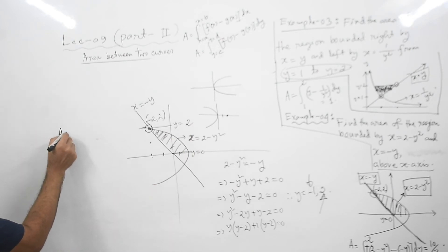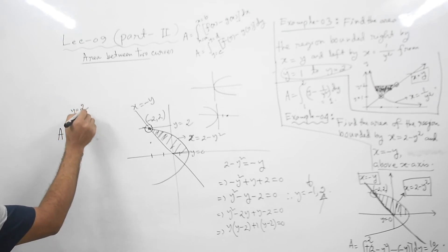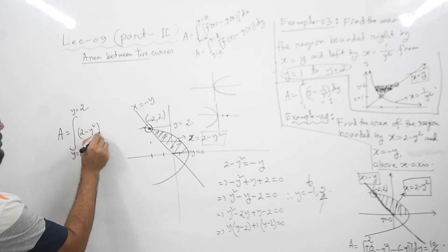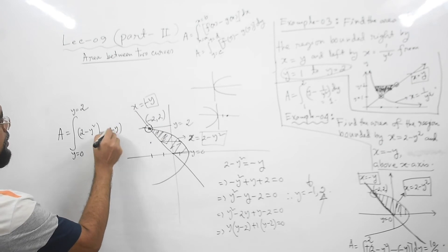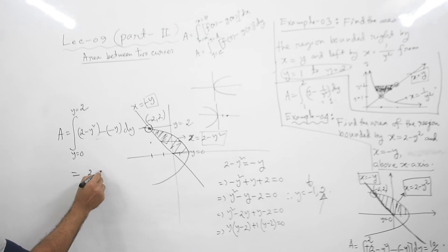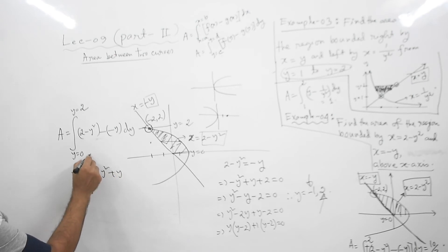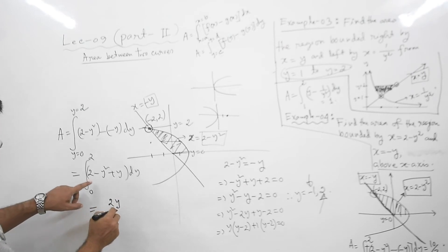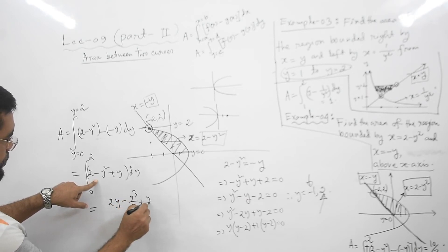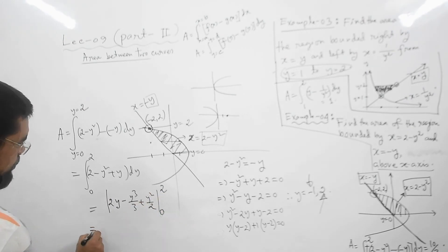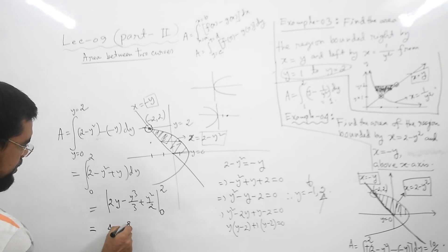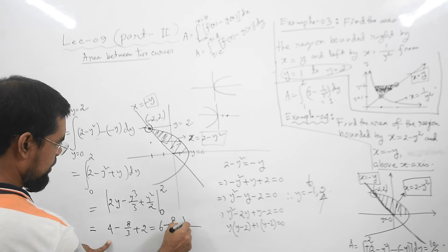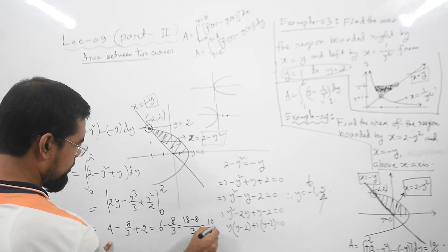The area A equals the integral from y = 0 to y = 2 of (right curve - left curve) dy. The right curve is 2 - y² and the left curve is -y, so we integrate (2 - y² - (-y)) dy = (2 - y² + y) dy from 0 to 2. This equals [2y - y³/3 + y²/2] from 0 to 2, giving 4 - 8/3 + 2 = 6 - 8/3 = 18/3 - 8/3 = 10/3.